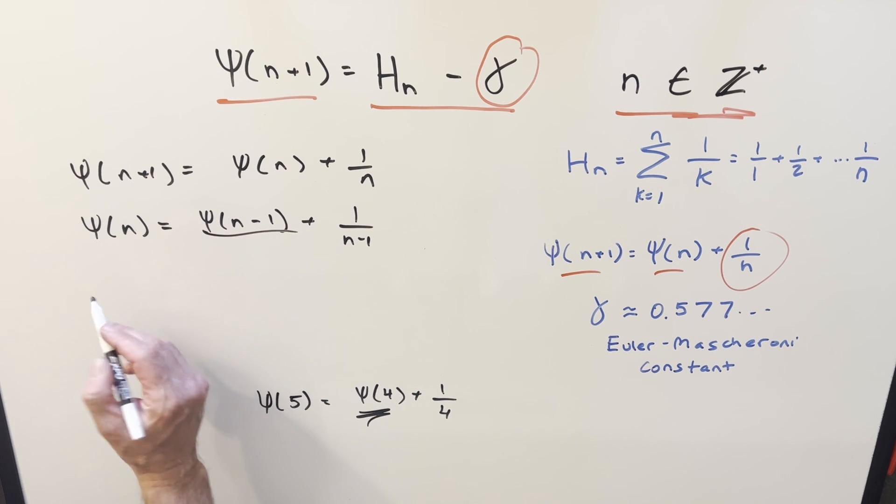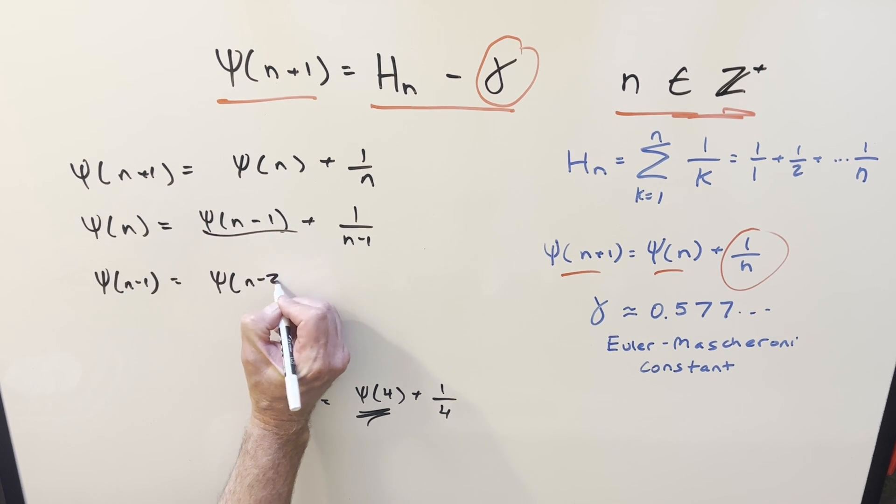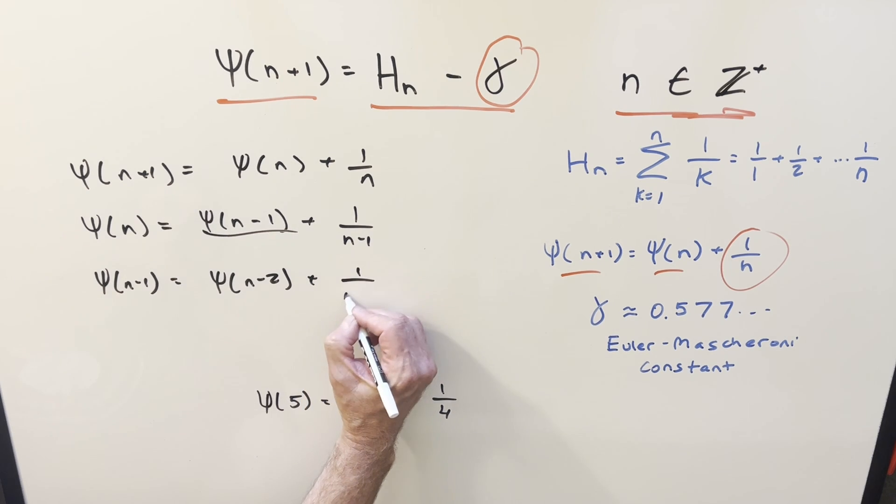But then what's digamma of n minus 1? Well, we do the same thing again. So then for digamma of n minus 1, subtract 1 again, this is going to be digamma n minus 2 plus 1 over n minus 2.